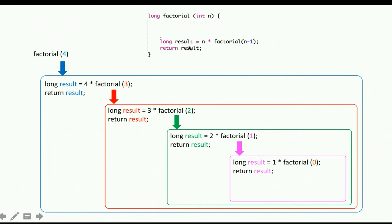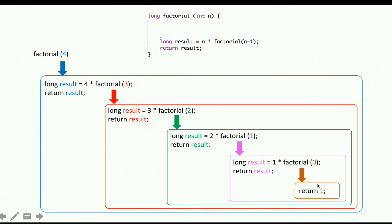It goes through the same function again, defines result, and now n is 1, so it computes 1 times factorial of 0. Factorial of 0 should definitely be 1 — this is the base case we mentioned. It's not calculated; we simply define it. So in the function, we add: if n is 0, return 1. When n is 0, it directly returns 1 without going through the rest of the function — anytime you have a return, it ignores everything after it.